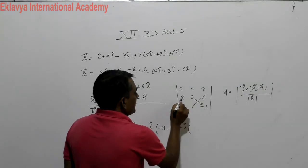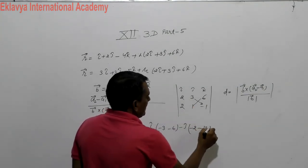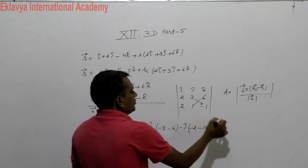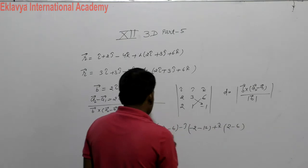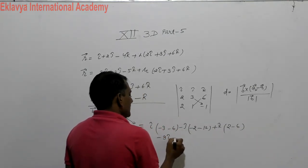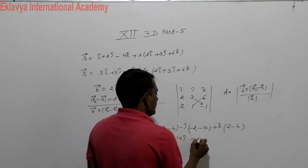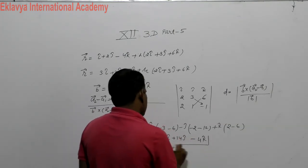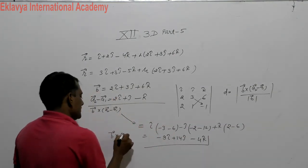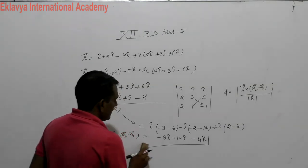Now we compute B cross (A2 minus A1) using the determinant. The result is: i-cap times (3 times minus 1 minus 6 times 1), minus j-cap times (2 times minus 1 minus 6 times 2), plus k-cap times (2 times 1 minus 3 times 2). This gives minus 9 i-cap plus 14 j-cap minus 4 k-cap. This is the vector B cross (A2 minus A1).